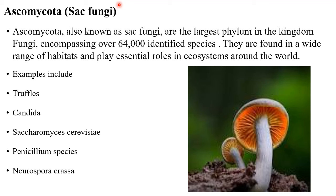The next phylum is Ascomycota, literally known as sac fungi. They are the largest in the kingdom of fungi, comprising about 64,000 identified species. They are found in a wide variety of habitats and are essential in ecosystems around the world. Ascomycota are the biggest phylum in the kingdom of fungi, and we find them in many aspects of life — in industry and the medical world.